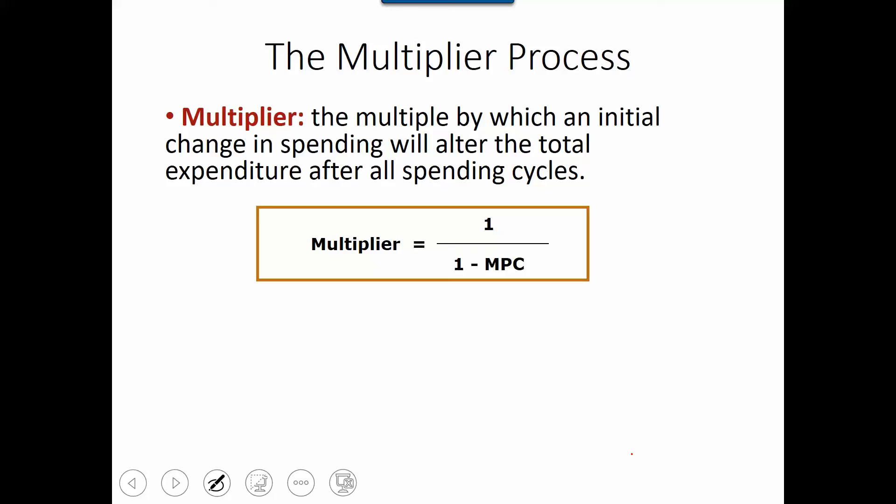So the multiplier itself is calculated by 1 divided by 1 minus MPC. So the MPC we learned in chapter 9, that is the marginal propensity to consumption.